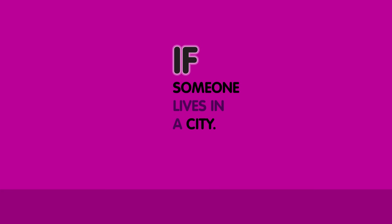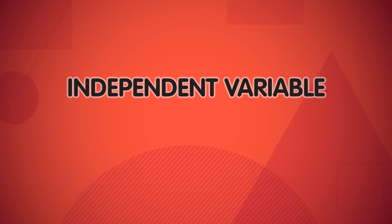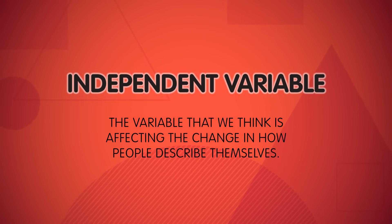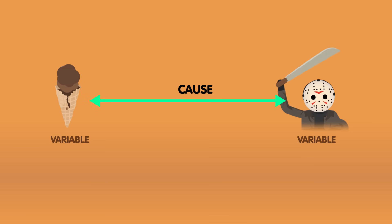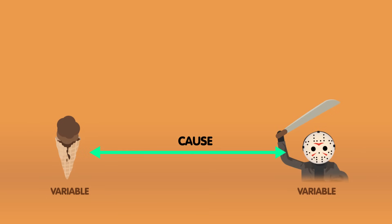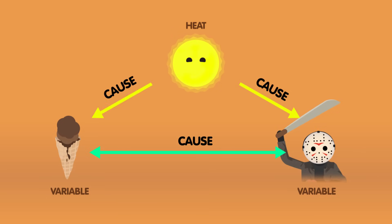Once you know how you want to measure your variables, your hypothesis will be an educated guess about how they're related, often using an if-then statement. For example: if someone lives in a city, then they are less likely to refer to themselves as middle class. In this case, geographic location is the independent variable – it's the variable that we think is affecting the change in how people describe themselves. But you can also have variables that you believe are affected by changes in your independent variable – these are your dependent variables. Your hypothesis is that they change when the independent variable changes. But you have to be careful, because correlation does not always equal causation. Correlation is what happens when two variables move together. It can be easy to misinterpret a correlation to conclude that one thing causes the other when it really doesn't. For example, murder rates tend to be high when ice cream sales are high, but it's ridiculous to think that more ice cream causes more violence, or vice versa.